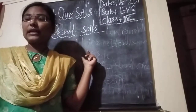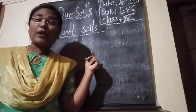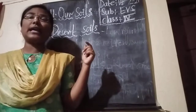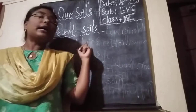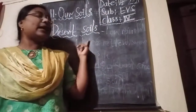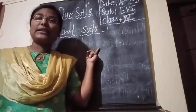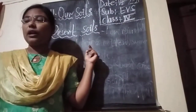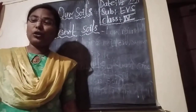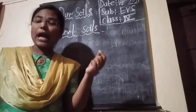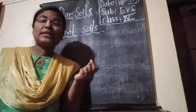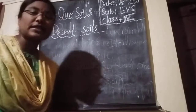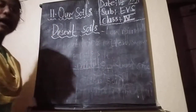In desert soils, we are looking at the soils of Rajasthan. Desert means barren land. Deserts can be seen in Rajasthan, Haryana, and South Punjab. South Punjab is sandy.